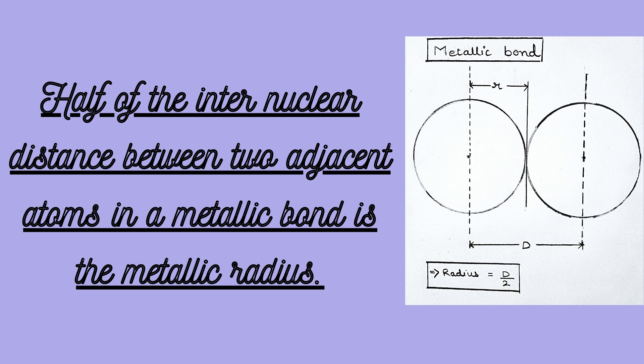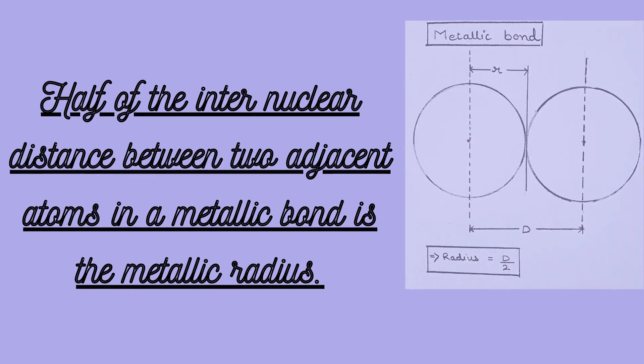For example, in the diagram given in your screen, consider these two circles as two metal atoms. The distance between the nuclei of these two metal atoms that are next to each other is D. Then, the metallic radius becomes D by 2.